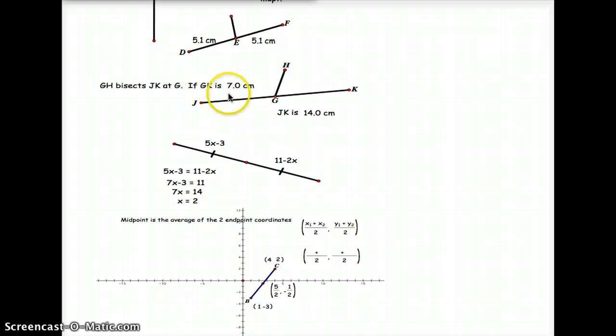But because we know that GK is 7, this is 7, and we know that JK, the whole segment is 14, we can deduct or conclude that JG must be 7 either because this plus this must equal 14.